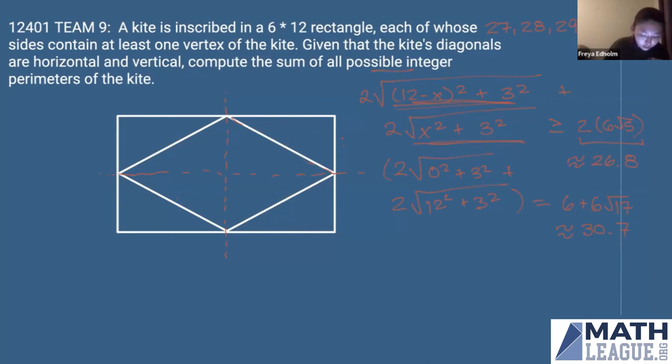So our other case would be if our two equal sides are here and there. So then once again, let's say that this is x, this is going to be six minus x, and then we have six and six because of our lines of symmetry. Okay. So this time, our perimeter is going to be two times the square root of six squared plus x squared plus two times the square root of six squared plus (six minus x) squared. Okay, cool.